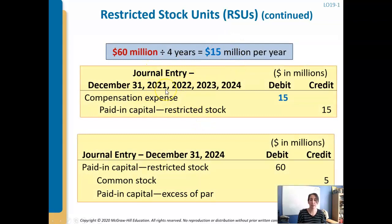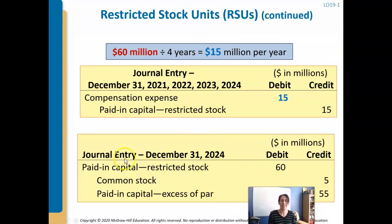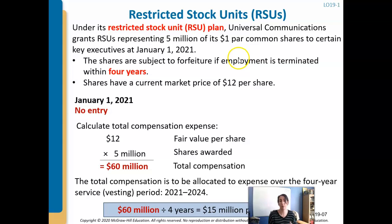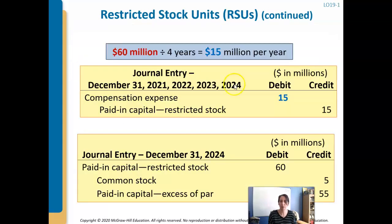Every year at the end of the year, as these people work, they're earning it — we record the expense in the period in which it's earned. Our journal entry is a debit to compensation expense and a credit to paid-in capital restricted stock for $15 million, which is the $60 million divided by four years. When they finally vest after four years, the paid-in capital restricted stock account will have accumulated $60 million. The final entry debits paid-in capital restricted stock $60M, credits common stock $5M (at $1 par times 5 million shares), and credits paid-in capital in excess of par for the remainder, since we always record common stock at par.